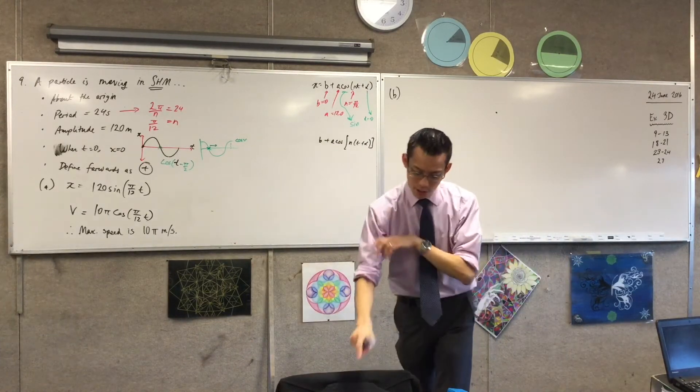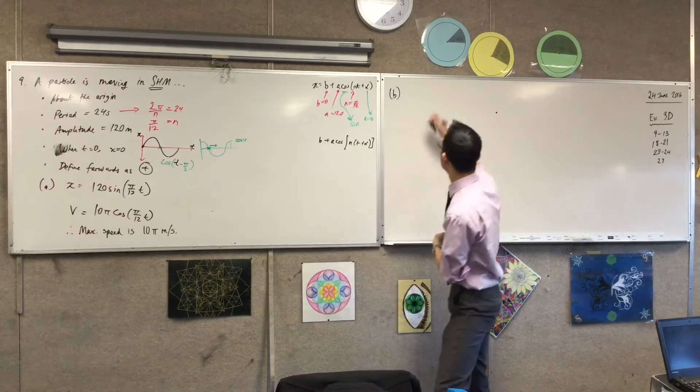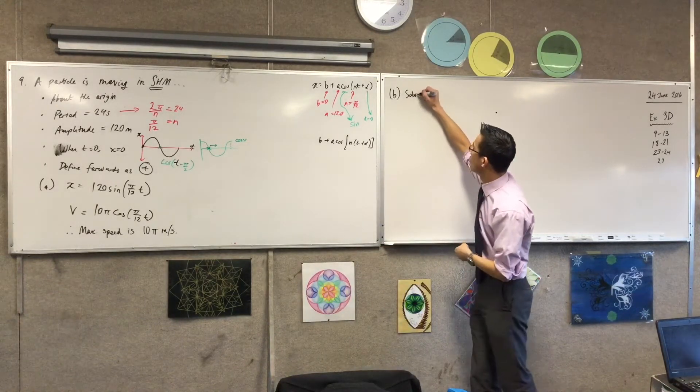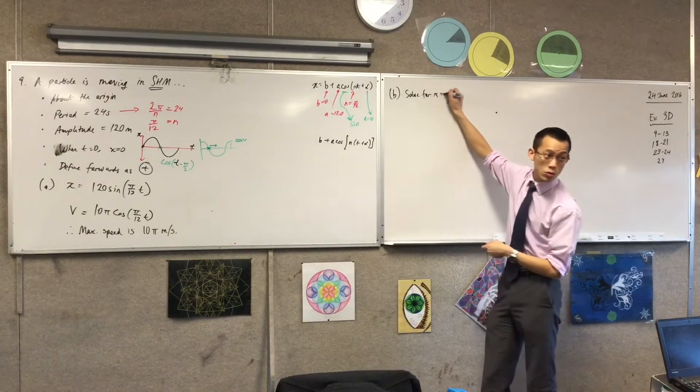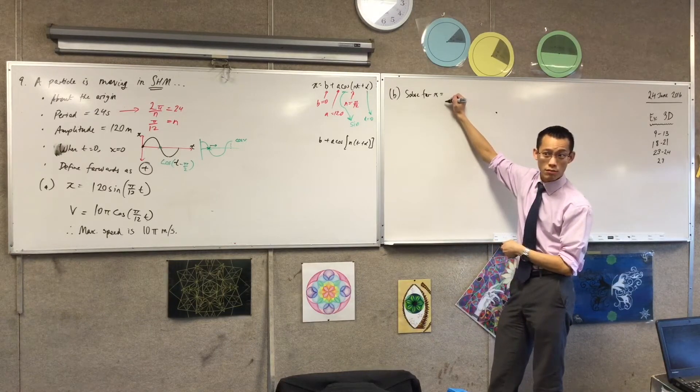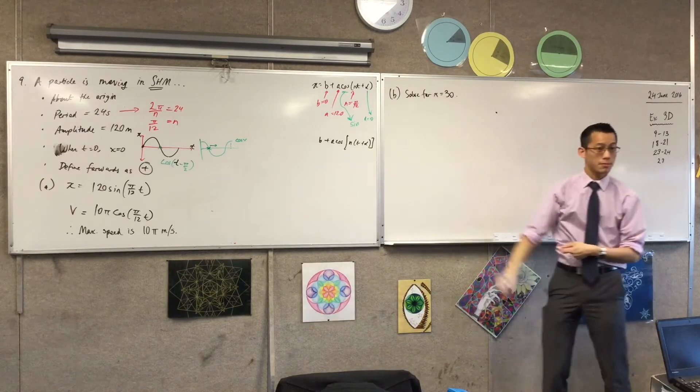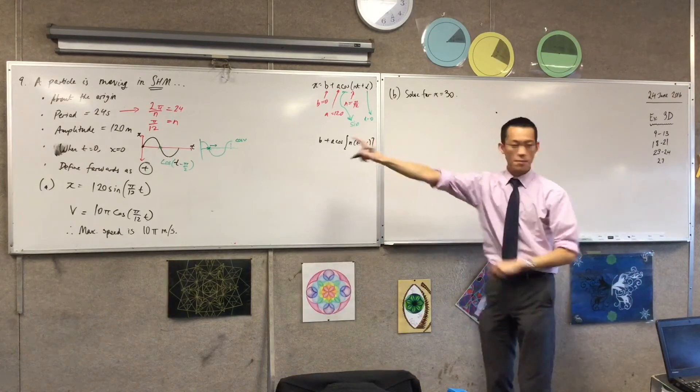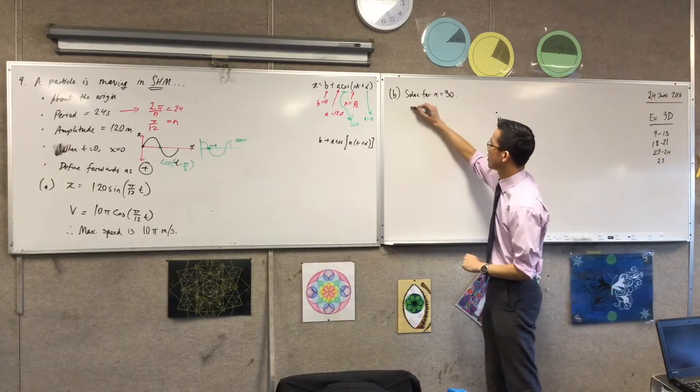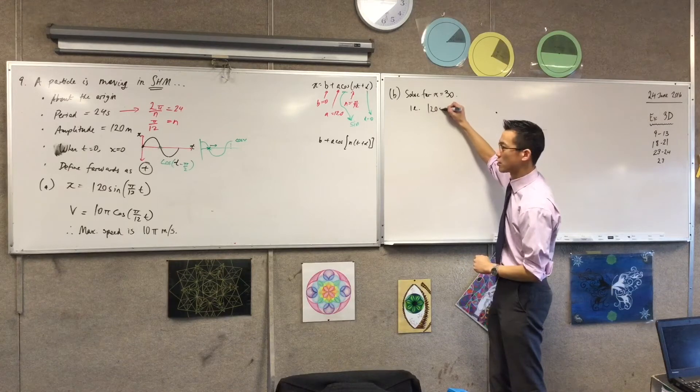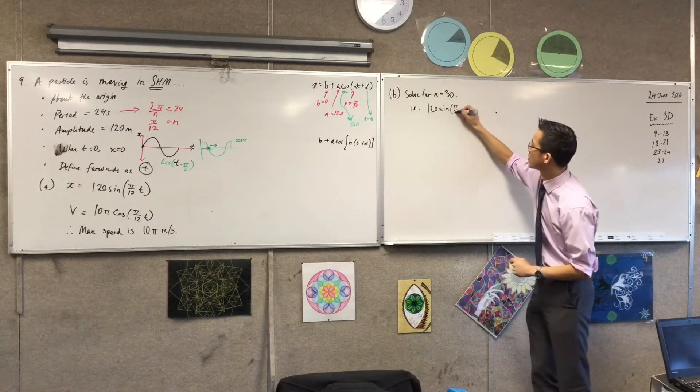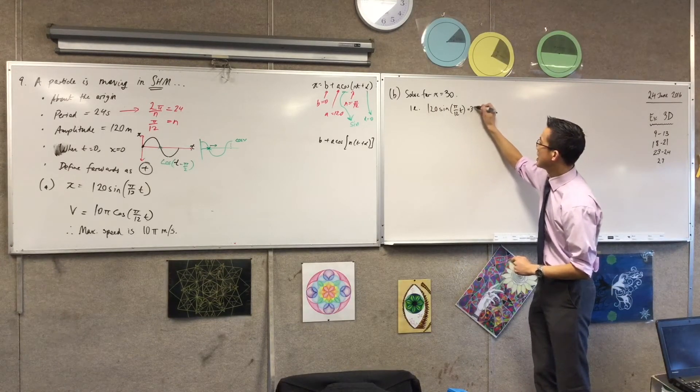I'm going to say to the right is positive, so for the first one, part one, I want to know, I want to solve for x equals positive or negative. This is to the right, so I'm going to say 30. Okay, so let's actually do this. I've got my displacement function over there, so I'm going to say 120 sine of pi/12t equals 30.